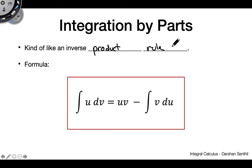There are a few problems that you might not be able to do with, say, u-substitution, that integration by parts now allows us to do. So it helps us expand our armory. This is the formula: the integral of u dv is equal to uv minus the integral of v du.